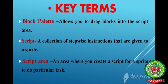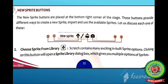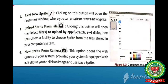Open page number 72 of your book. Another component of Scratch is new sprite buttons. The new sprite buttons are placed at the bottom right corner of the stage. These buttons provide different ways to create a new sprite, import and use the available sprites. The first button is choose sprite from library, next is paint new sprite, third is upload sprite from file, and fourth is new sprite from camera.